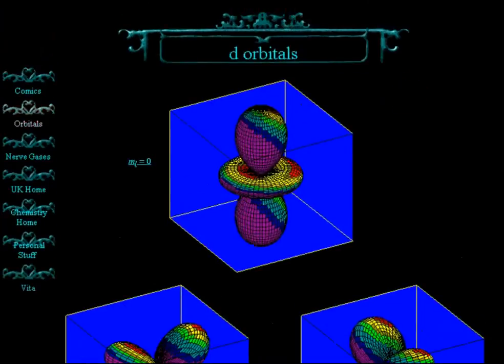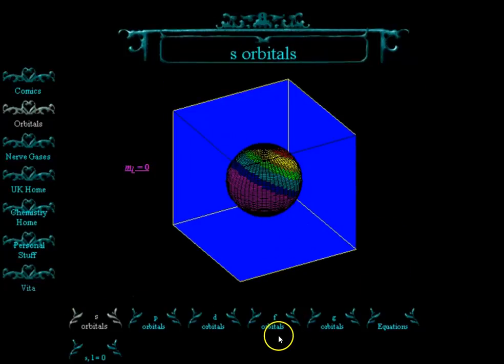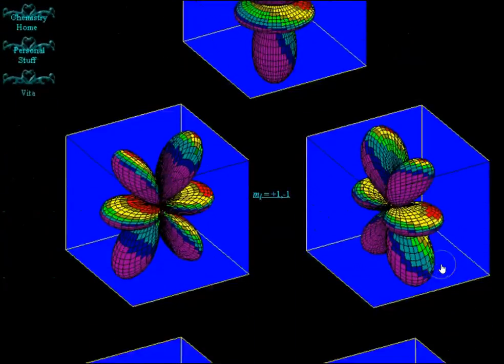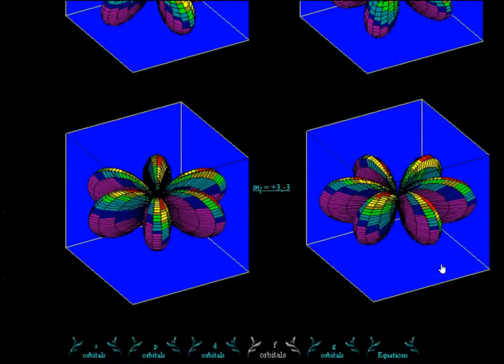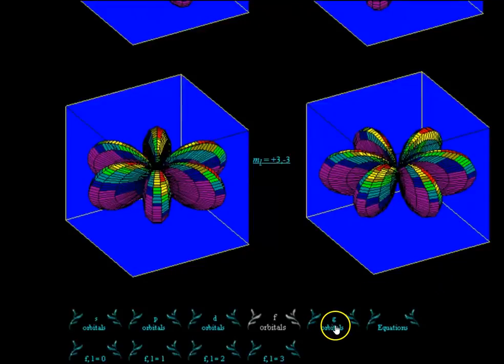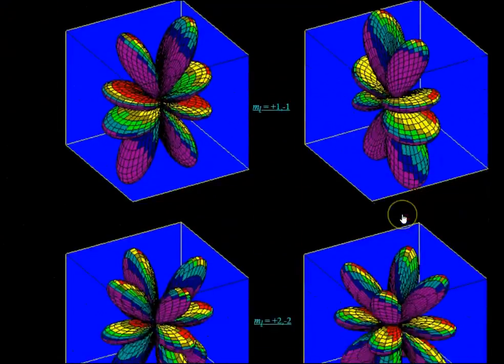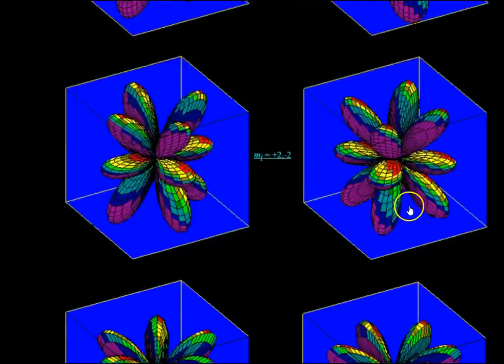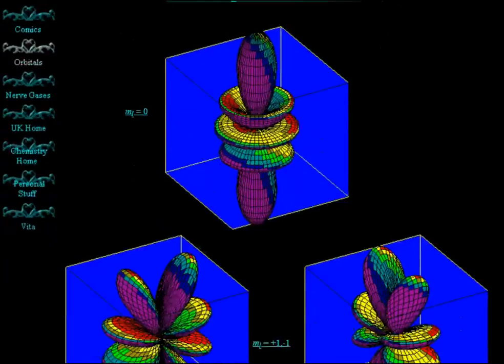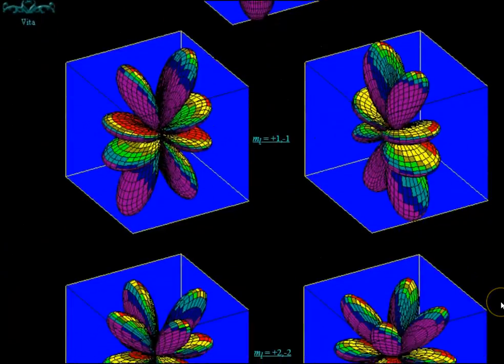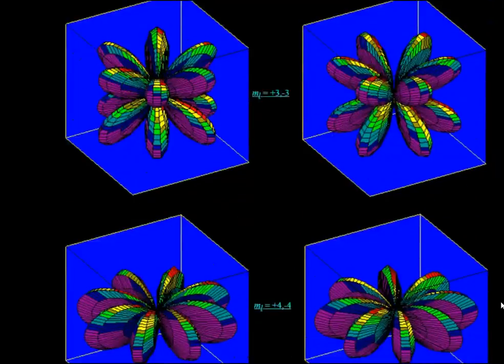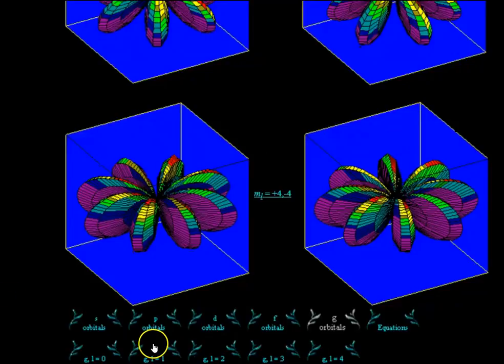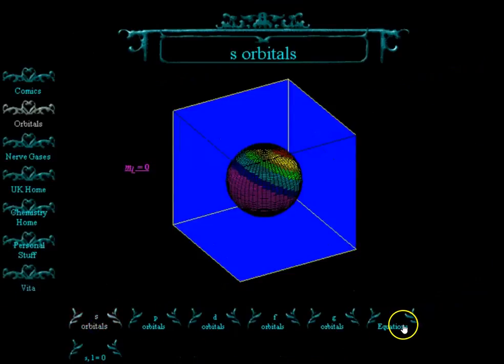And if we went back, we could even see that the F orbitals get even crazier. There are seven of those. And then finally, if we go to the G orbitals, there are nine of them. And they get crazier and crazier in shape. So what are we actually looking at here? What we're looking at is what the probability of finding an electron in space looks like. So these are pretty much telling you what the path of an electron looks like. We'll go back to S because that's the least freaky looking.